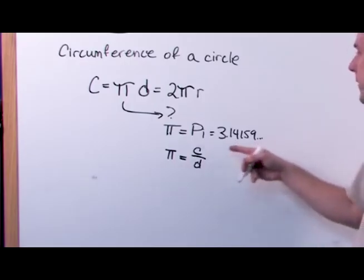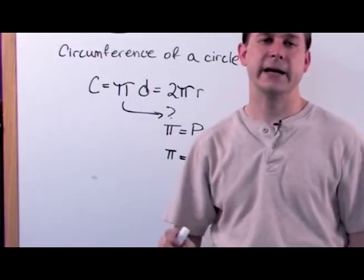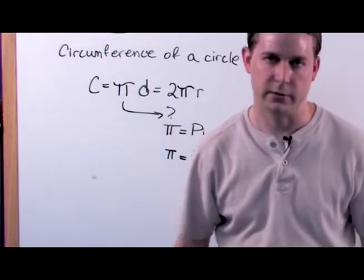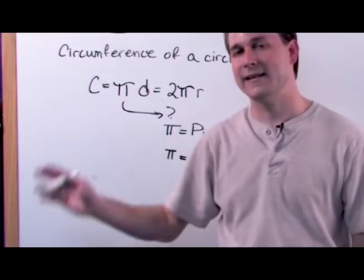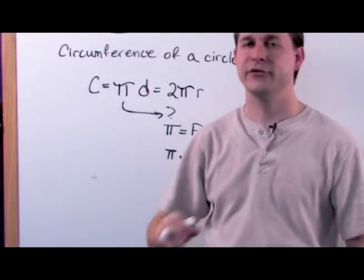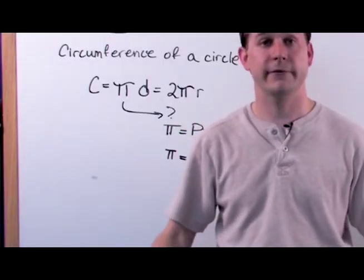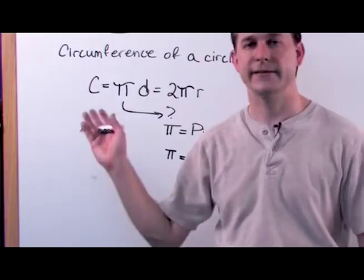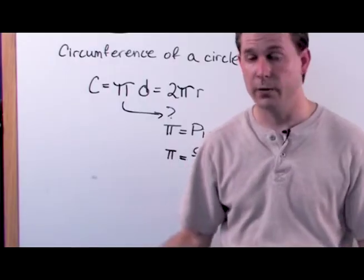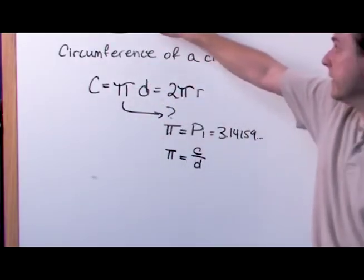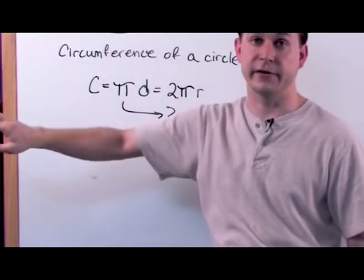Pi turns up everywhere — and I do mean everywhere. From geometry, to algebra, to calculus, to quantum mechanics, to every single branch of mathematics, pi is involved. It's a very special number. In this context, it's in terms of calculating the circumference of a circle.